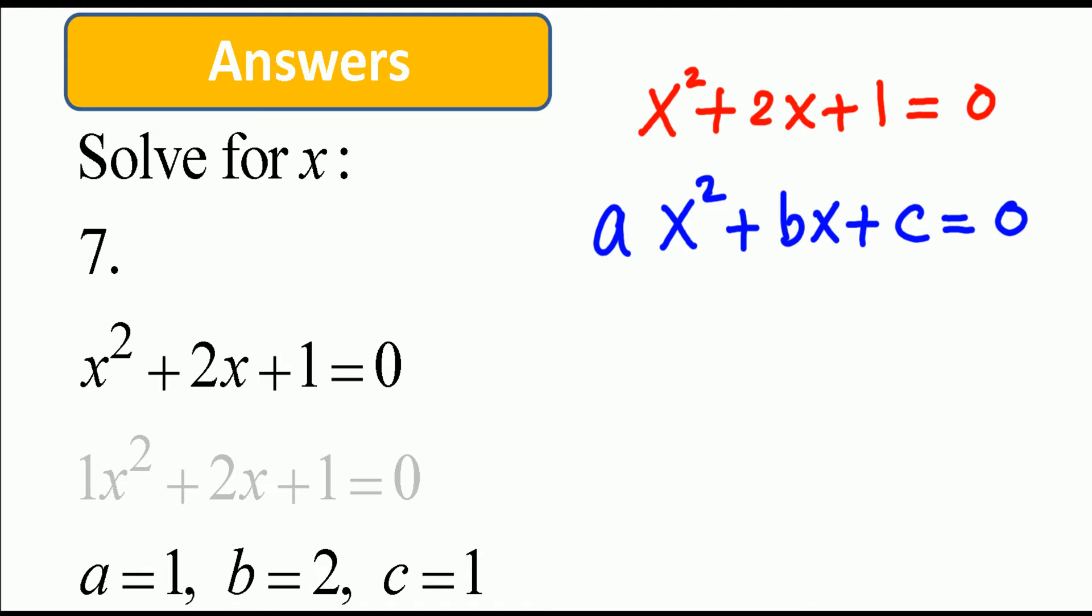When nothing is written next to x to the power of 2, it is 1. So we see that a is equal to 1, b is equal to 2, and c is equal to 1.